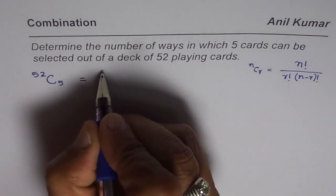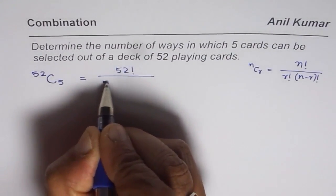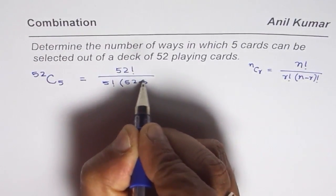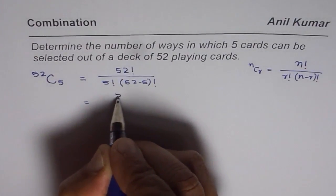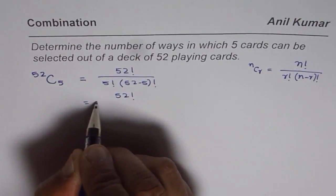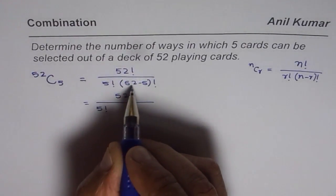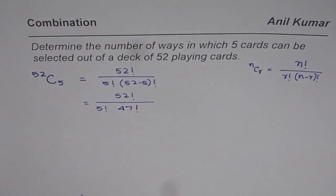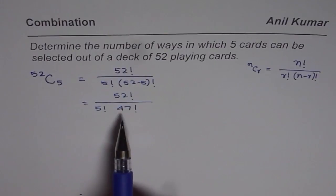So what we have here is 52 factorial divided by 5 factorial times 52 minus 5 factorial. That is to say it is 52 factorial divided by 5 factorial and 52 minus 5 is 47 factorial. Now at this stage you can use the calculator and find the answer. So that is one way of doing it.